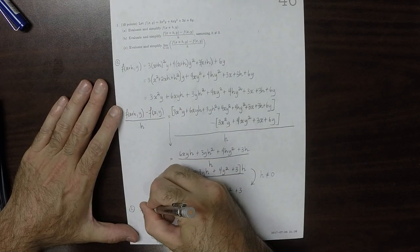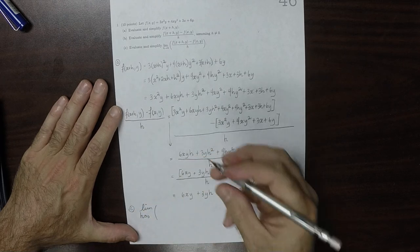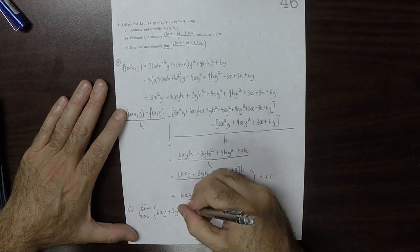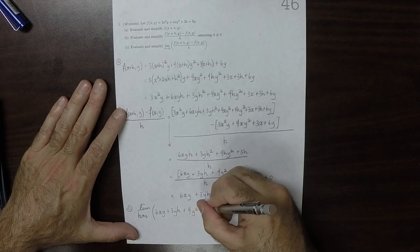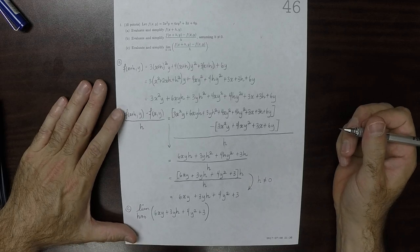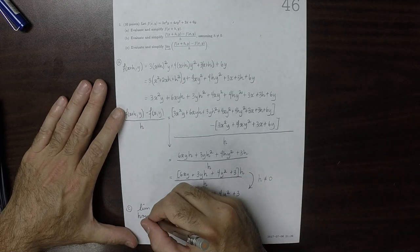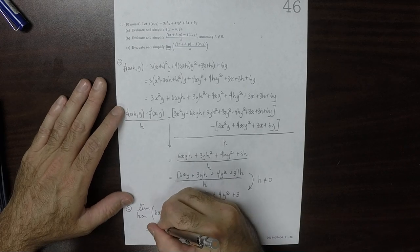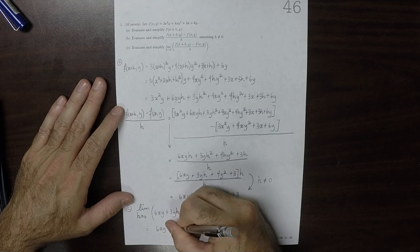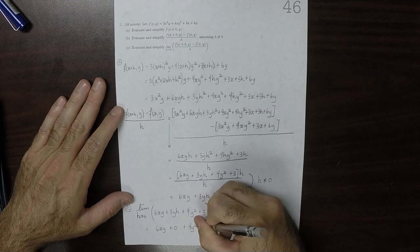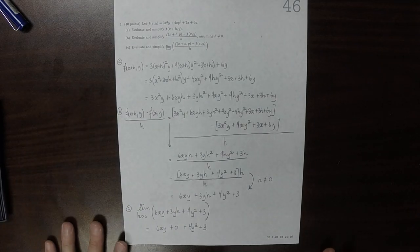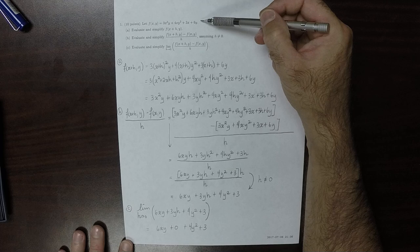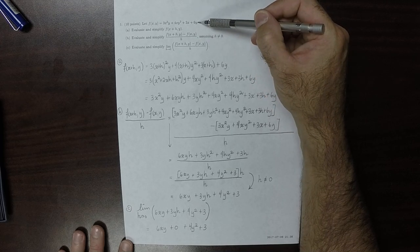And then see the limit as h goes to zero of 6xy plus 3yh plus 4y squared plus 3. And, of course, by this point in the class you understand that this is the definition of partial derivative with respect to x. And you can just check and see what is the partial derivative with respect to x of this expression? Well, it's that.